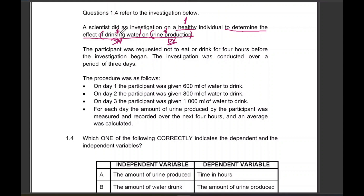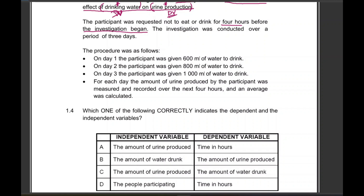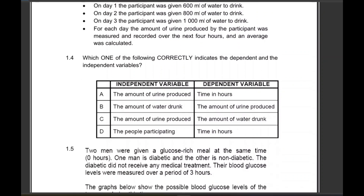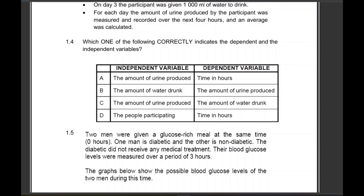The participant was requested not to drink or eat for four hours before the investigation began. The investigation was conducted over three days. On day one, the participant was given 600 milliliters of water. Day two, 800 milliliters. Day three, 1000 milliliters. For each day, the amount of urine produced was measured and recorded over the next four hours, and an average was calculated. Which one of the following correctly indicates the dependent and the independent variable?